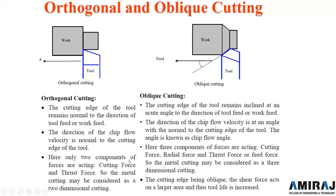In orthogonal cutting there are two components of force: the cutting force and the thrust force, and the metal cutting process is considered two-dimensional (2D). In oblique cutting there are three force components: cutting force, radial force, and thrust force, making it a 3D process. Because the cutting edge is oblique, the shear force acts on a larger area and thus tool life is increased.